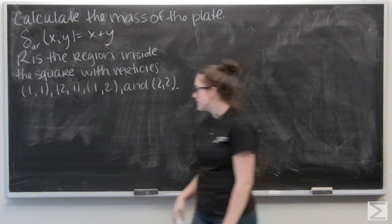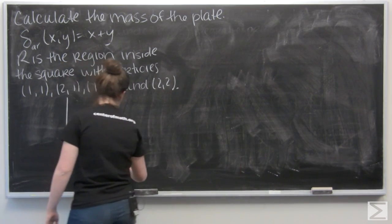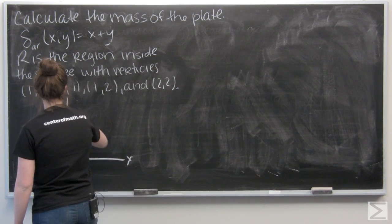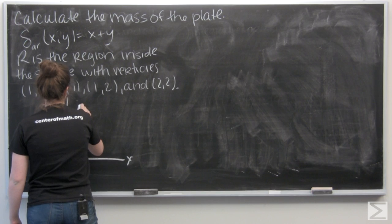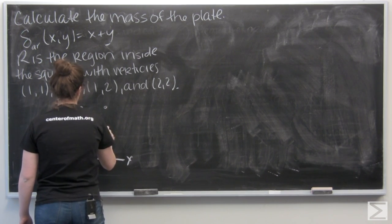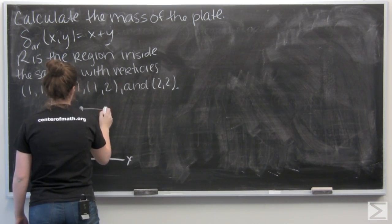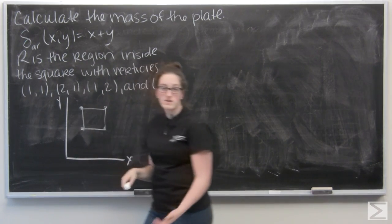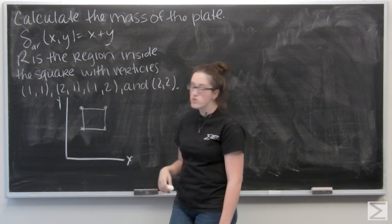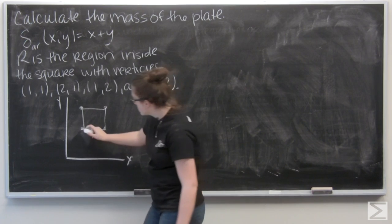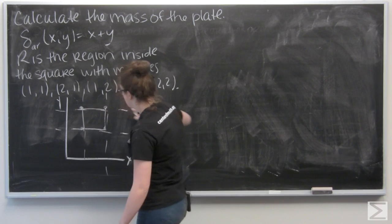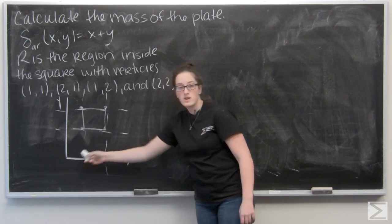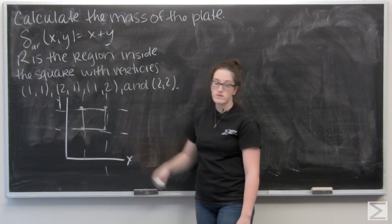Let me go ahead and draw that plate for you. Give you the first quadrant. So I'm looking at a square and x and y both go from 1 to 2, right? I can think about the lines x equals 1, x equals 2, y equals 1, y equals 2.